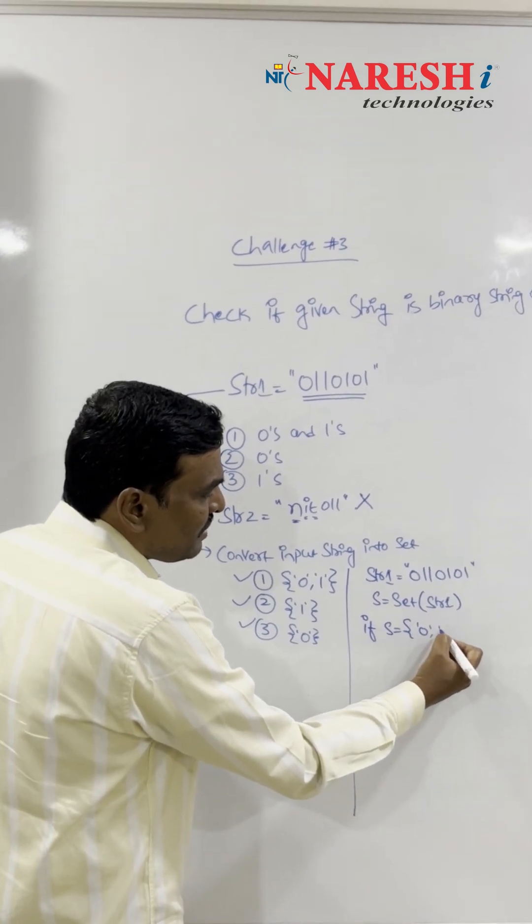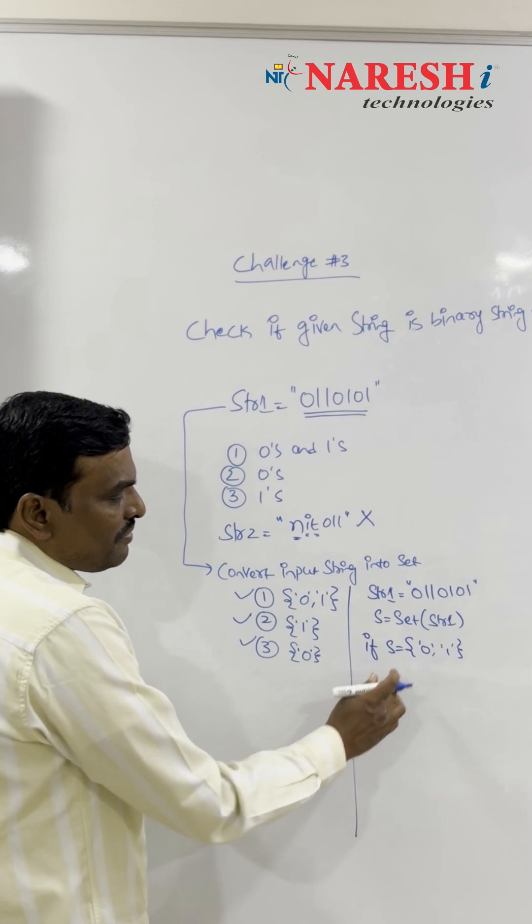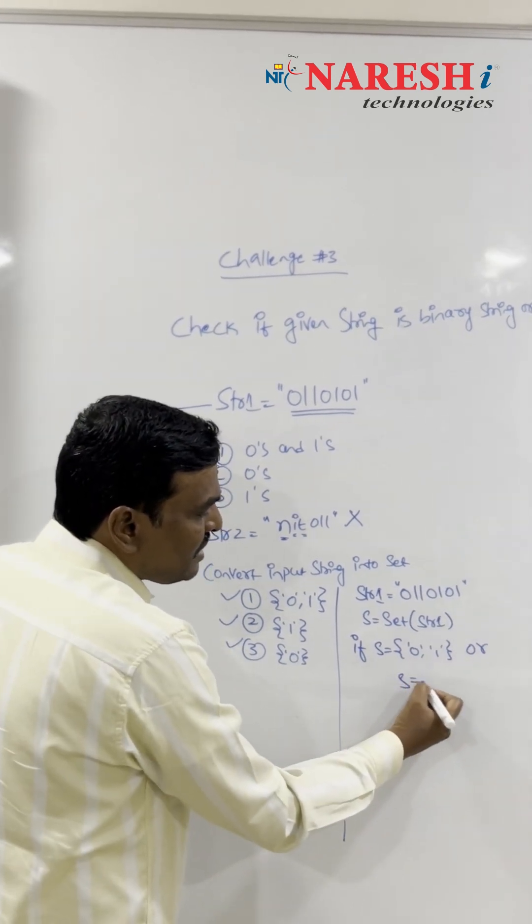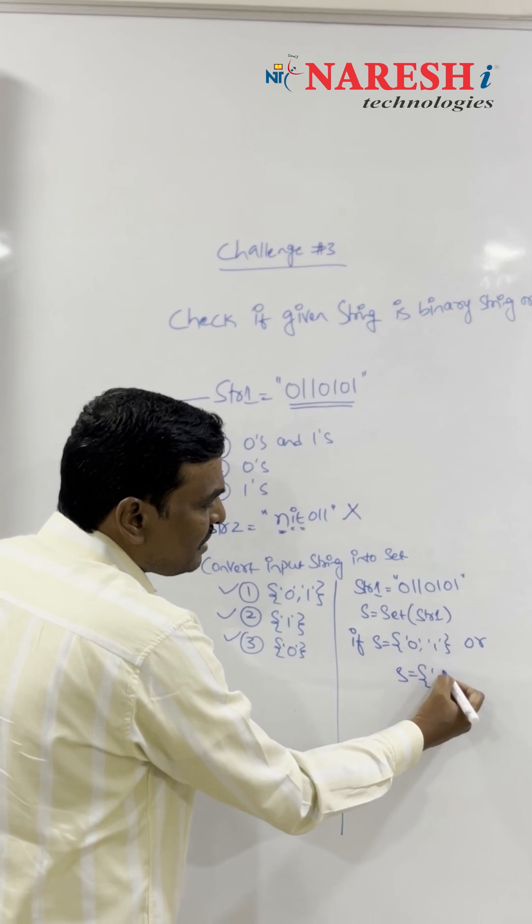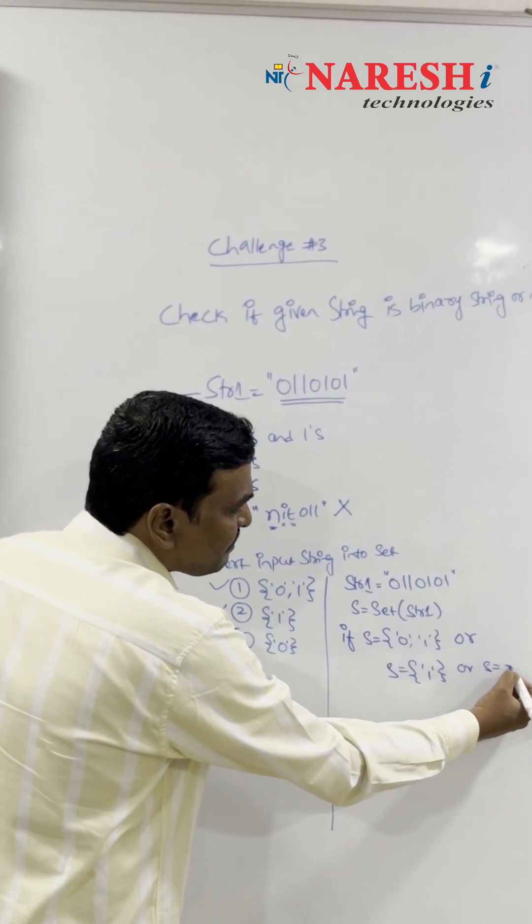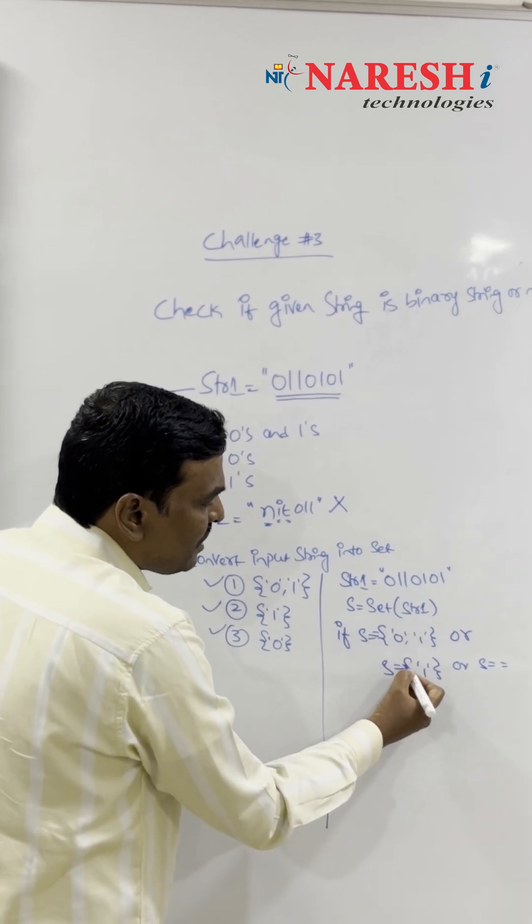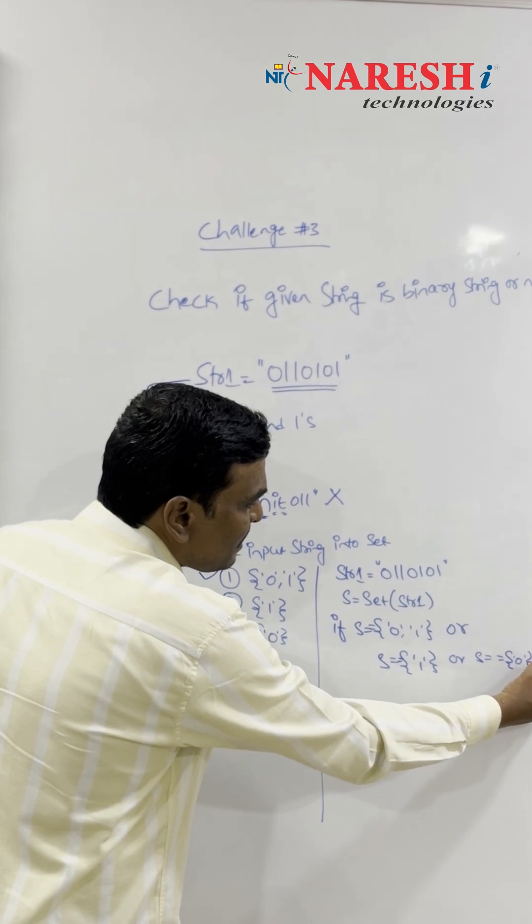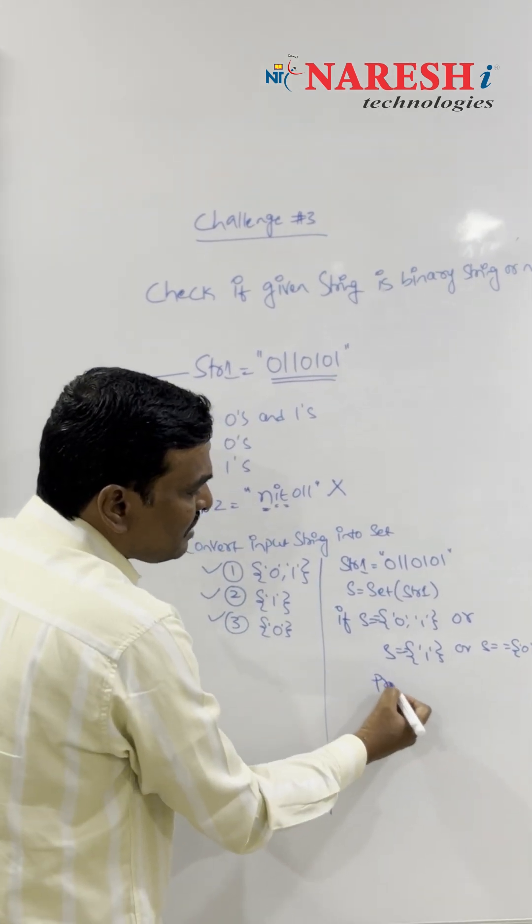If s equals {0, 1} or s equals {1} or s equals {0}, then you are saying the string is a binary string.